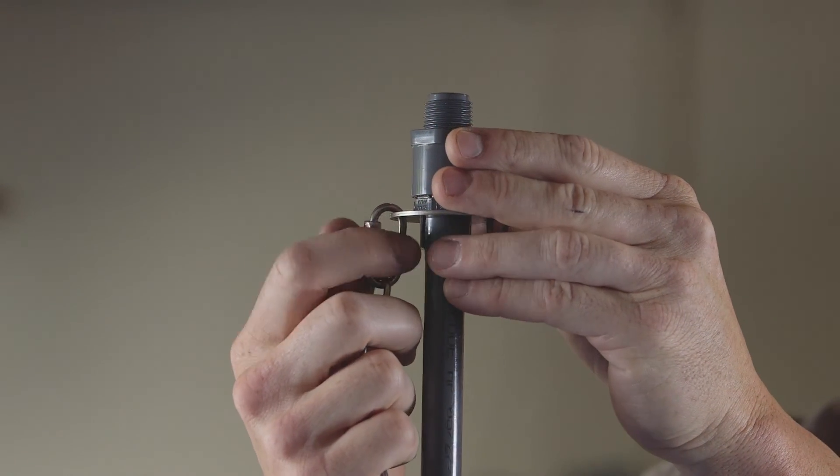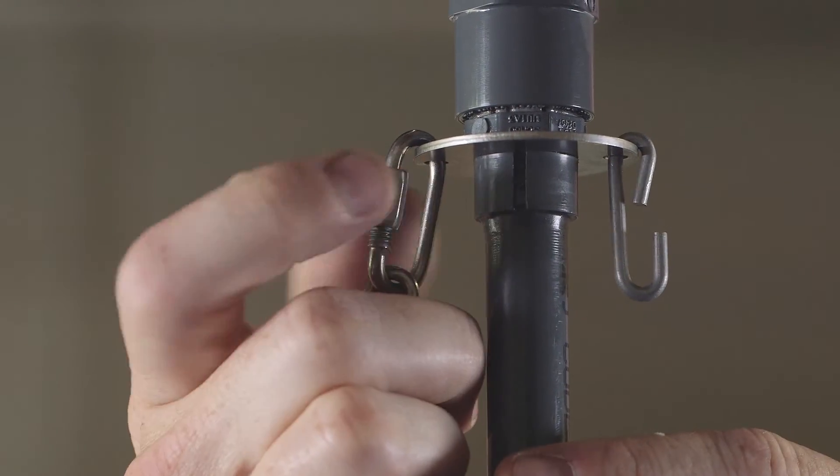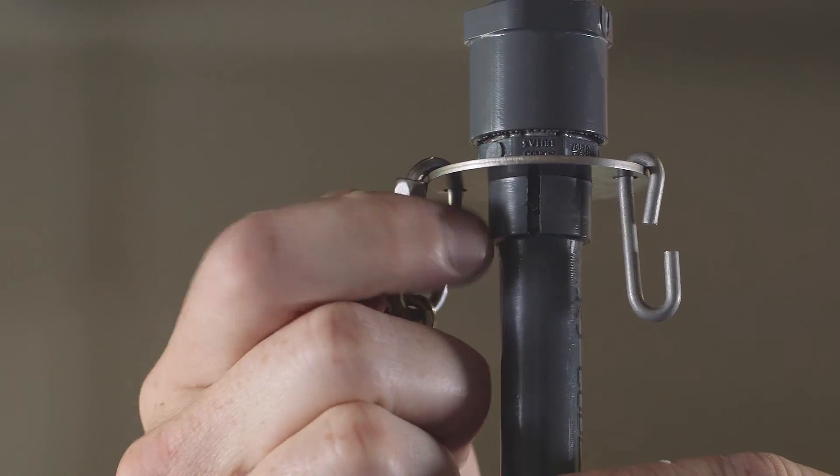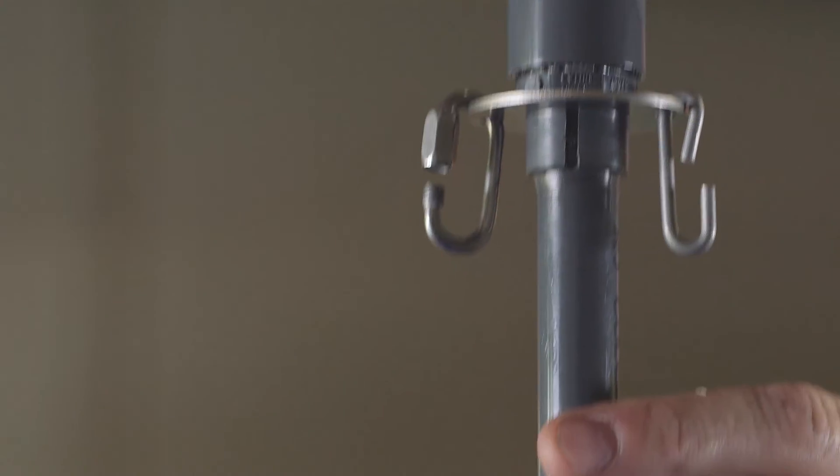Now that the valve is closed and the pipe has been isolated, disconnect the limit chain from the threaded connector and completely remove the solution tube.